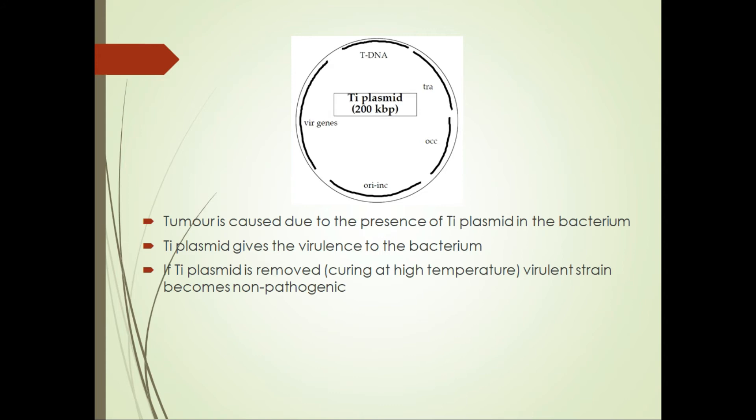The Ti plasmid is the reason the bacterium is pathogenic. It is about 200 kilobase pairs long — covalently closed, circular, extra-chromosomal, self-replicating DNA. At the top of the plasmid map, there is a region called T-DNA, where T stands for transfer. This part of the Ti plasmid is the only portion transferred to the plant cell, so it is called transferred DNA or T-DNA. Tumor is caused in the plant only because of this Ti plasmid; if it is removed by growing the bacterium at higher temperature, the virulent strain becomes non-pathogenic.